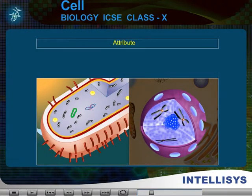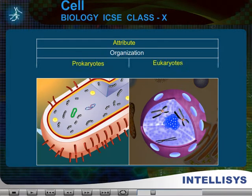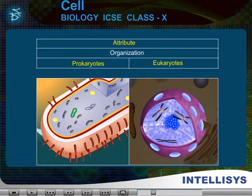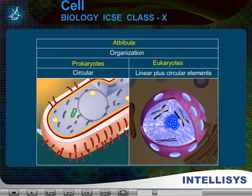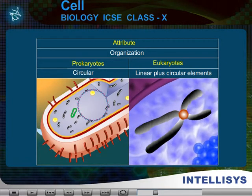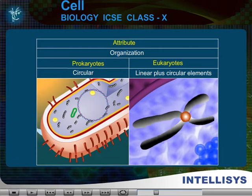Attribute: Organization. In the case of prokaryotes, it is circular. In the case of eukaryotes, it is linear plus circular elements.